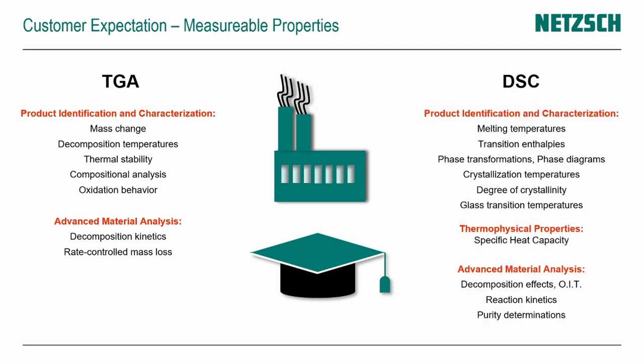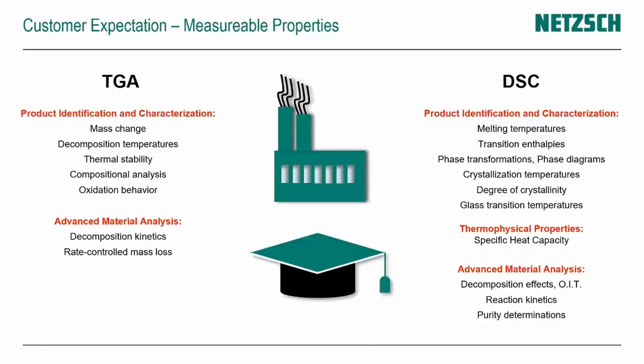DSC is similar, where we look at different kinds of properties like the melting temperature, phase transitions with the related enthalpy, degree of crystallinity, crystallization temperature, and many more to characterize products. DSC also allows thermophysical property determination, especially the determination of the specific heat of a material. DSC can also do advanced analytic approaches like OIT or the analysis of reaction kinetics.